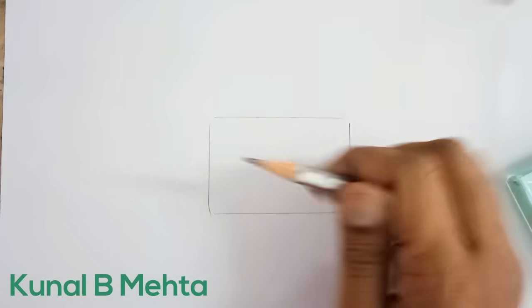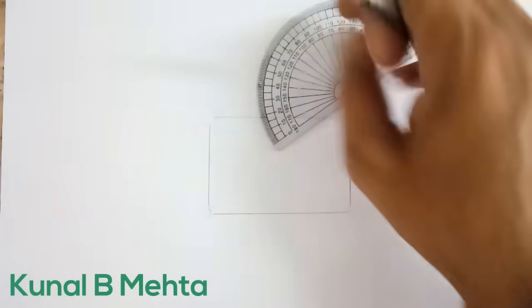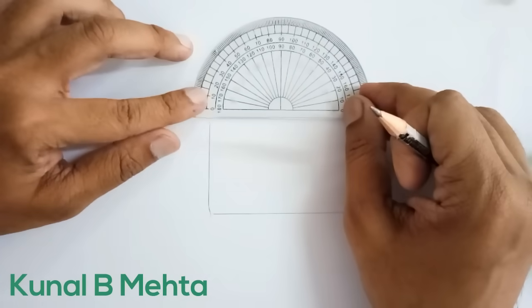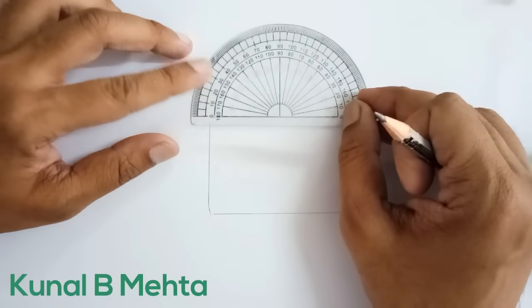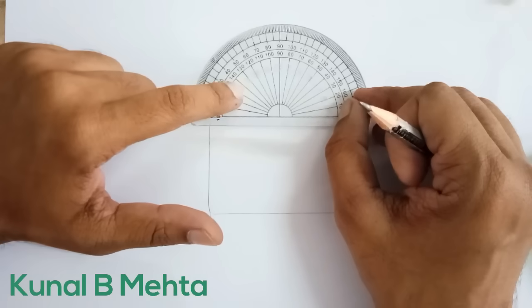Okay, so here is the outline of our glass slab. Now, with the help of protractor, keep the protractor exactly in between like this and I need to draw an angle of 60 degree with the normal.